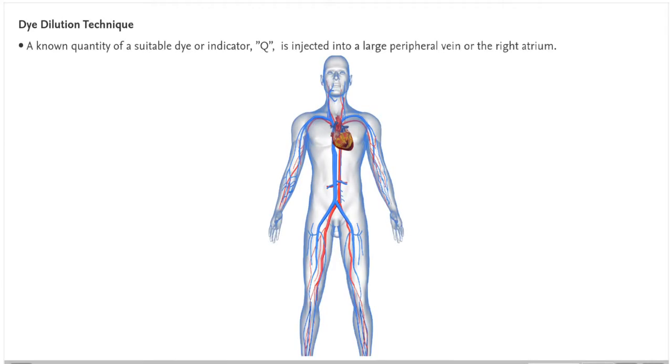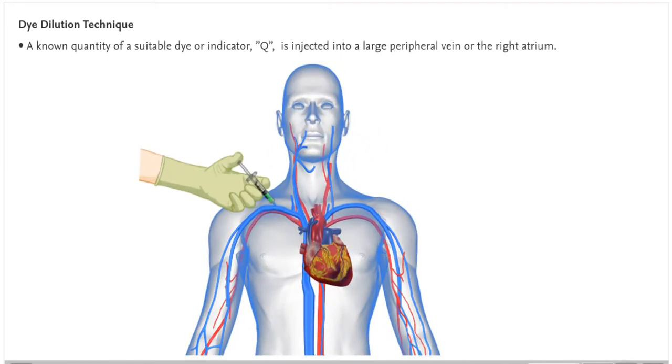Dye dilution technique: A known quantity of a suitable dye or indicator, Q, is injected into a large peripheral vein or the right atrium.